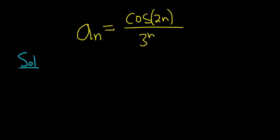You can do this intuitively, or you can show work. Intuitively, the cosine of 2n is bounded by 1. That means it's between negative 1 and 1.